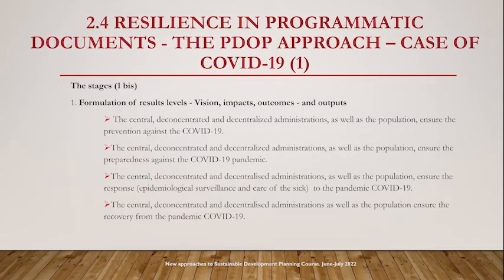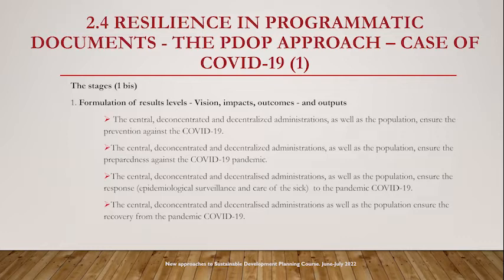By doing so, in relation to each of the resilience phases, we can have the following results. The first could be that the central, concentrated, and decentralized administration, as well as the population, ensure prevention against COVID-19 — relating to prevention. As you can see, we have some mixed outcomes here because this outcome relates to the central, concentrated, and decentralized administration. In terms of results orientation, we need to break that down to have a very specific result. We will have one, two, three, four sub-outcomes regarding prevention.